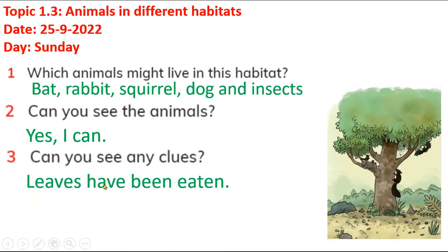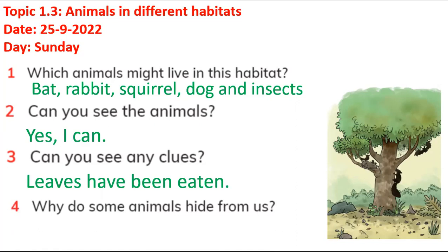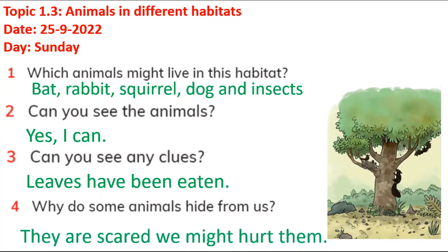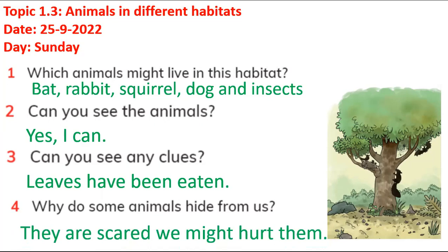Some insects eat leaves — like snails or birds — and that is a clue that animals are living there. If you see drops or droppings on the land, it means an animal is living nearby. Animals hide from us because they are scared we might hurt them, so they find a safe place.